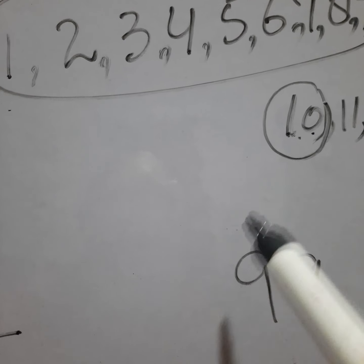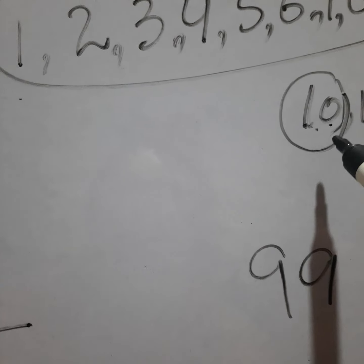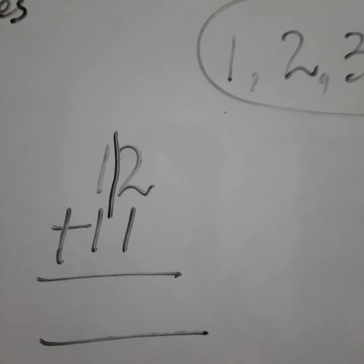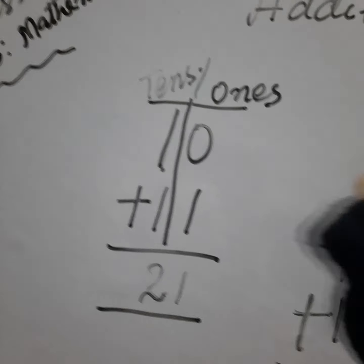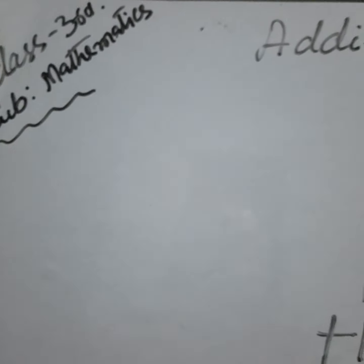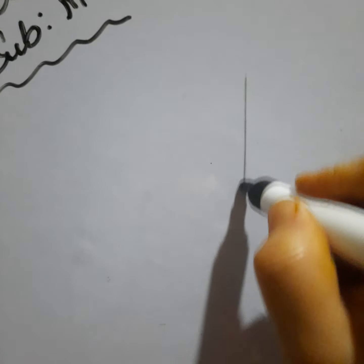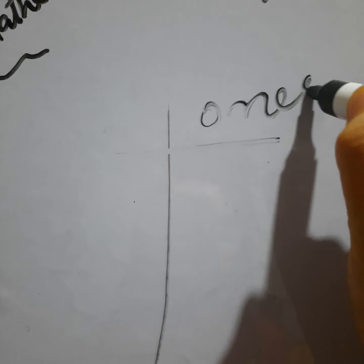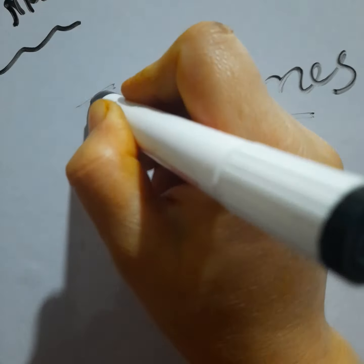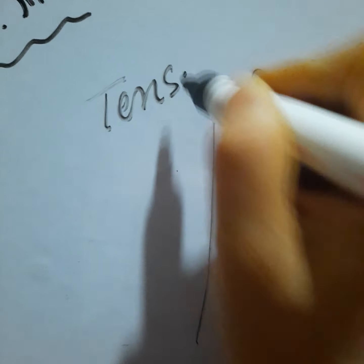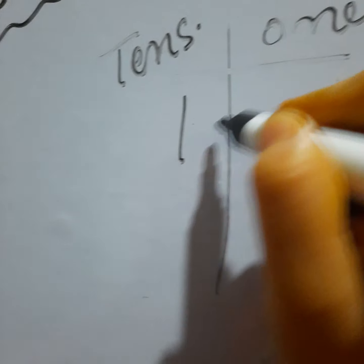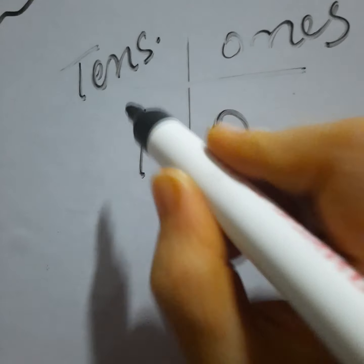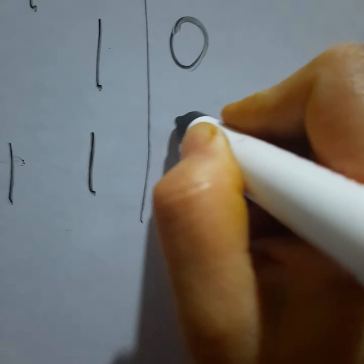Now we will do addition of two digit numbers. Let's start with the lowest two digit numbers and add them. This is 10: ones place has 0, tens place has 1. Plus 11: ones place has 1, tens place has 1.